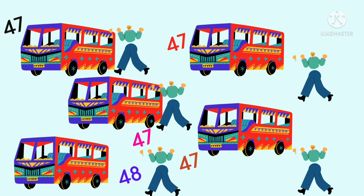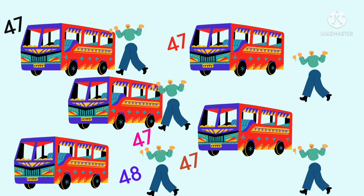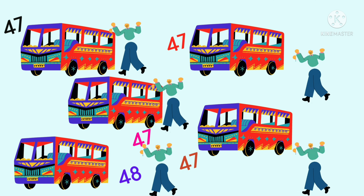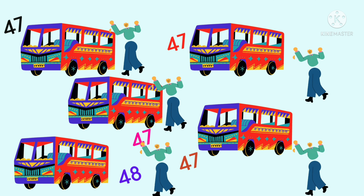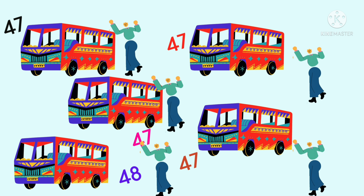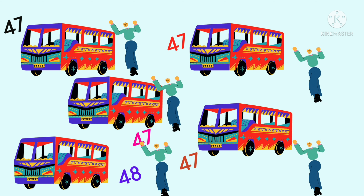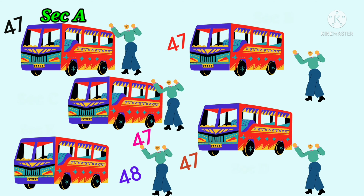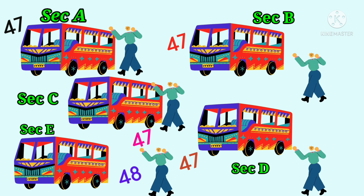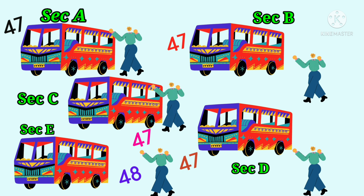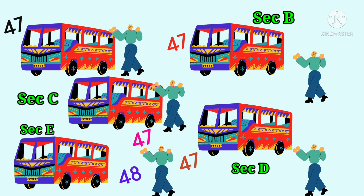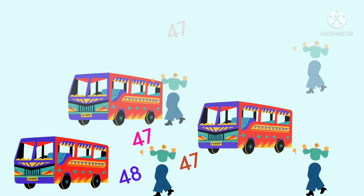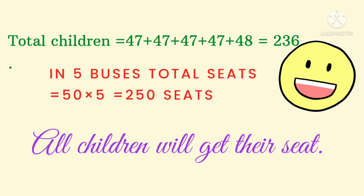Let's get the solution through a picture. A bus can carry 50 students and here there are only 47 in section A. Similarly, all sections have less than 50. Yes, everybody can go!